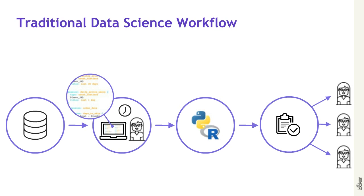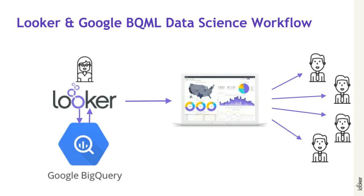So let's see what this can look like now with Looker and BQML. First and foremost, one of the biggest strengths BigQuery brings to the table is that BQ is the home of the data — it's a transformation layer as well as the ML layer now. We don't have to worry about making decisions about where we're doing the transformations and machine learning, or at what point we move the data. Those decisions are all taken care of because we don't need to worry about computational power — BigQuery has an insane amount of it.